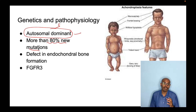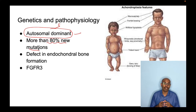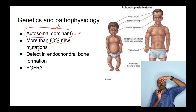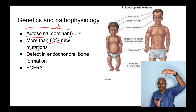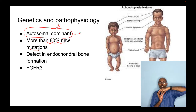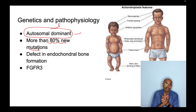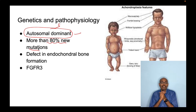Achondroplasia causes a defect in enchondral bone ossification, which is important for the lengthening of bones. Enchondral ossification occurs in long bones, whereas intramembranous ossification — the other type — occurs in the clavicle and the skull.